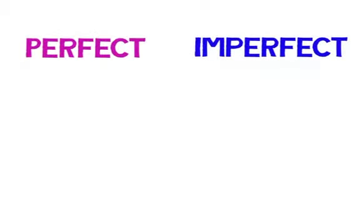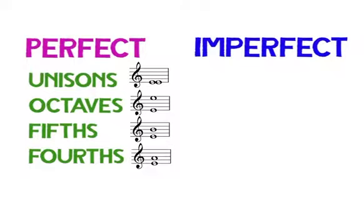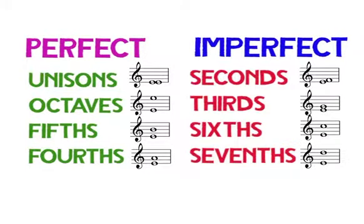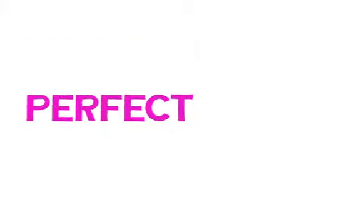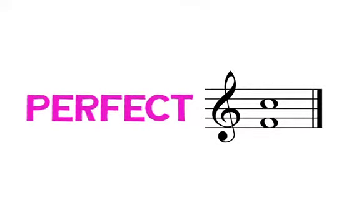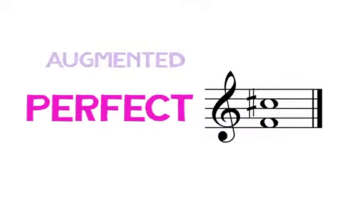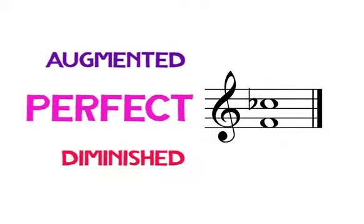Remembering in our last lesson, intervals can fall into one of two categories, perfect or imperfect. Perfect intervals include the unison, octaves, fifths, and fourths, whereas imperfect intervals include seconds, thirds, sixths, and sevenths. Intervals that are perfect can never be major or minor. One half step larger than a perfect interval is called augmented, and one half step smaller than a perfect interval is called diminished.